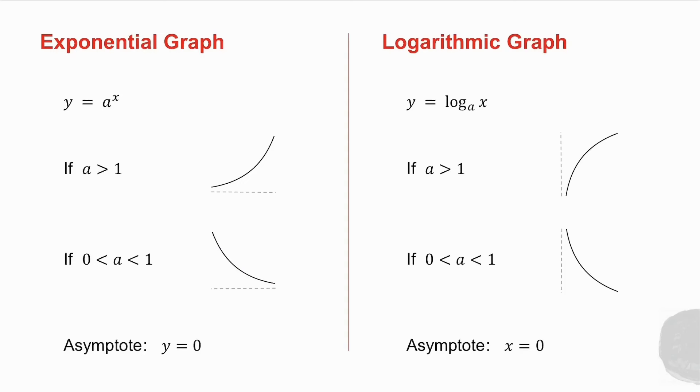In my exponential graph, the asymptote was y equals 0. So in the inverse, my logarithmic graph, the asymptote is x equals 0.